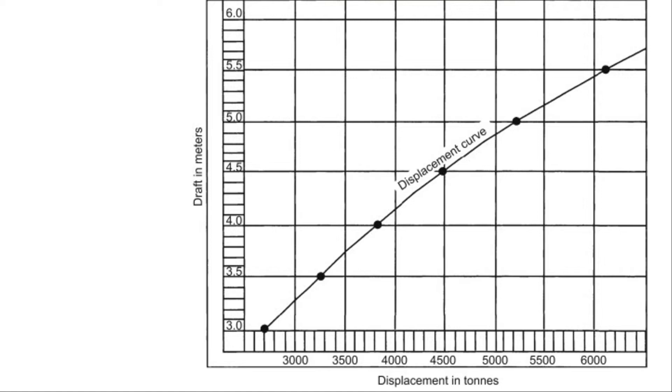The kind of question you could be asked using a table like this, with displacement on the x-axis and draft on the y-axis, is what is the draft at a displacement of 5,000 tons?